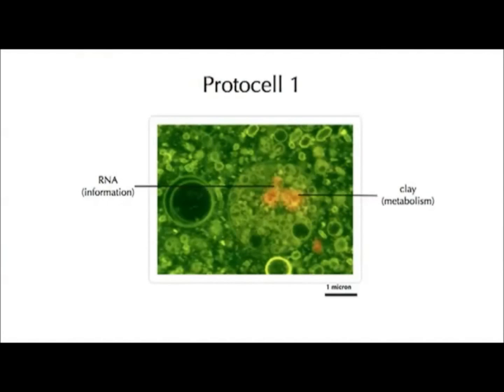The RNA comes along and starts to associate with the surface of this clay. This structure can then organize the formation of a membrane boundary around itself — a body of lipid molecules around itself, shown in green on this micrograph. So just through self-assembly, mixing things together in the lab, we can come up with a metabolic surface with some informational molecules attached, inside of a membrane body.